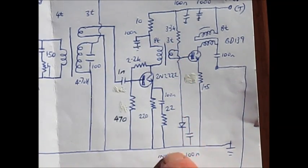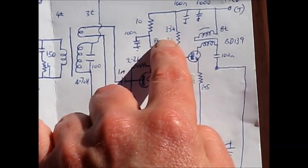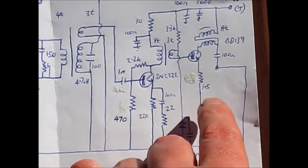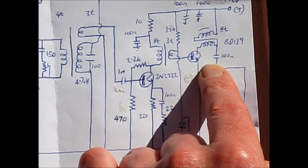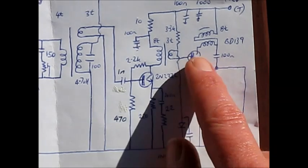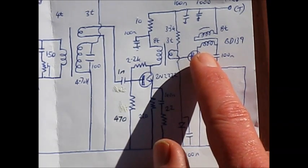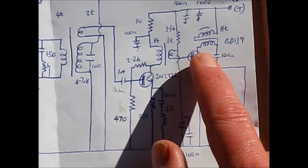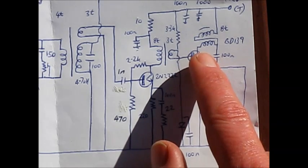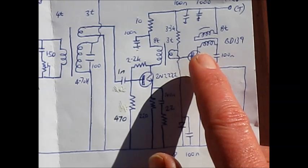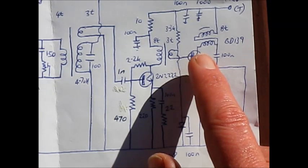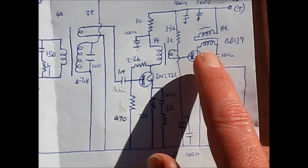That's a 1N4148 diode, and there's some DC supply here into the base of the final transistor, which is a BD139. In its collector is another broadband transformer comprising eight turns of thin enameled copper wire bifilar on a ferrite. It's wound on either a two-hole TV bead or an FT50-43 ferrite toroid.